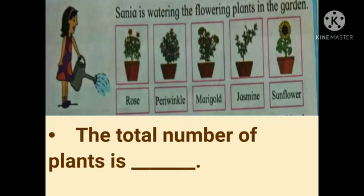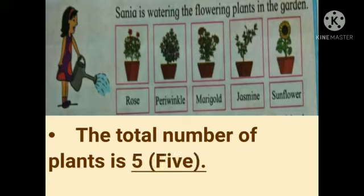Let's move to the next one. The total number of plants is blank. Students, how many total number of plants are there? The total number of plants is five.